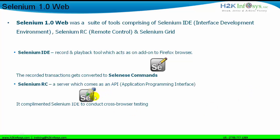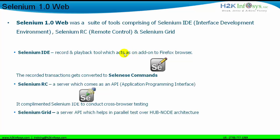The third tool in Selenium 1.0 is Selenium Grid, also a server-based API downloaded from the Selenium website and configured on your machines. Selenium Grid is used for parallel testing. For parallel testing, you create an architecture with a hub and nodes. The hub is the machine where Selenium Grid is configured; nodes are machines connected to the hub. The hub controls the nodes, enabling parallel testing. We will do a further analysis of these tools during the course of our training.